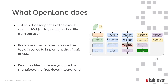As you can see here, OpenLane takes RTL descriptions of the circuit and JSON or TCL configuration files from the user — both are fine, but we do recommend JSON at this point. Then it runs a number of open source EDA tools in series to implement the circuit in ASIC. You'll see here we're going through Verilator just for linting, then RTL synthesis with IOSIS, placement and routing with OpenROAD, sign-off with OpenSTA, Magic, KLayout, and NetGen. All of this happens without user intervention and produces files for use as macros or files sent to the foundries for manufacturing.